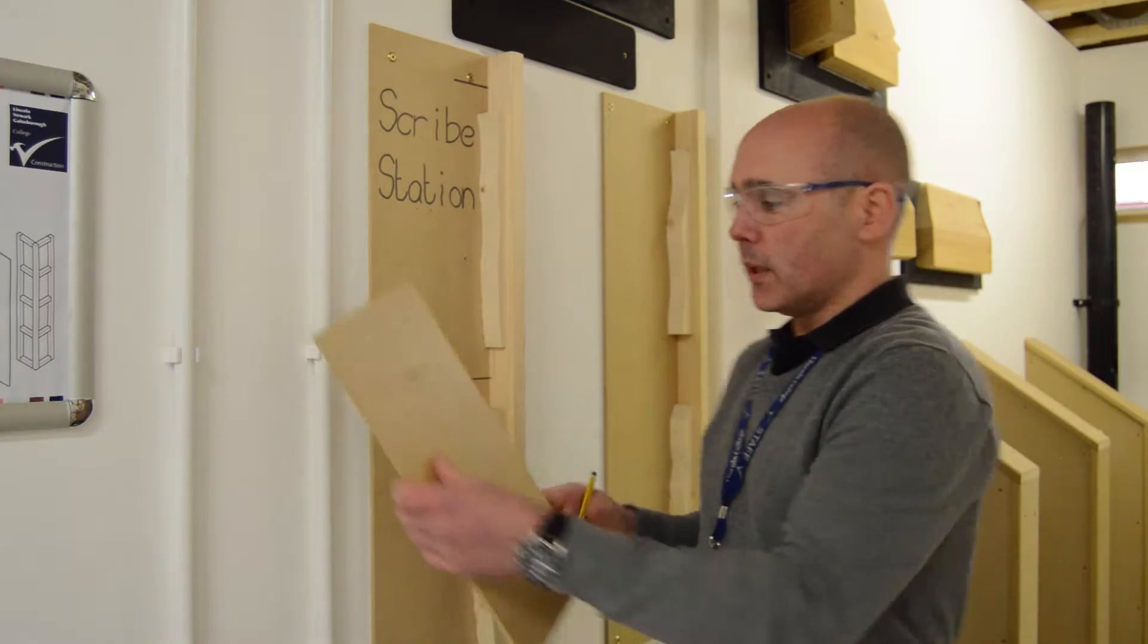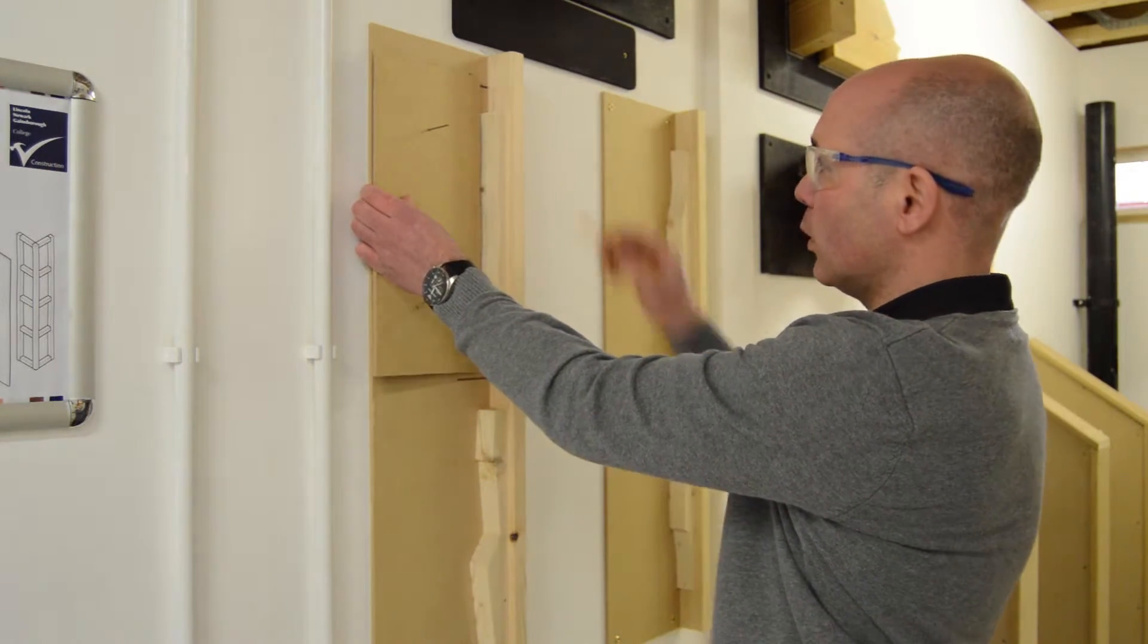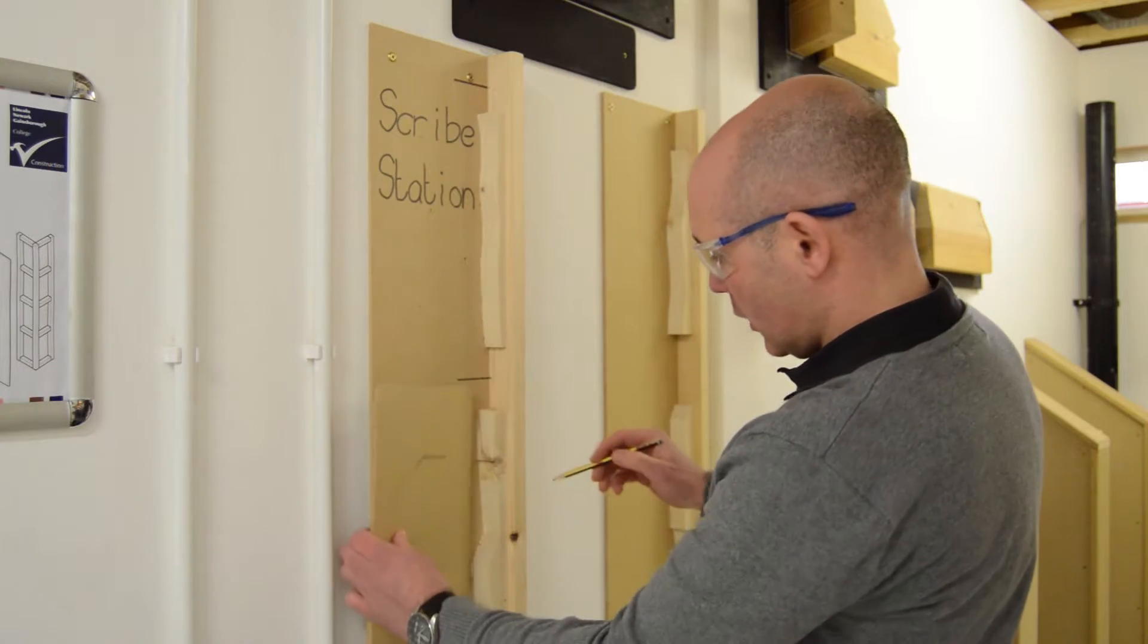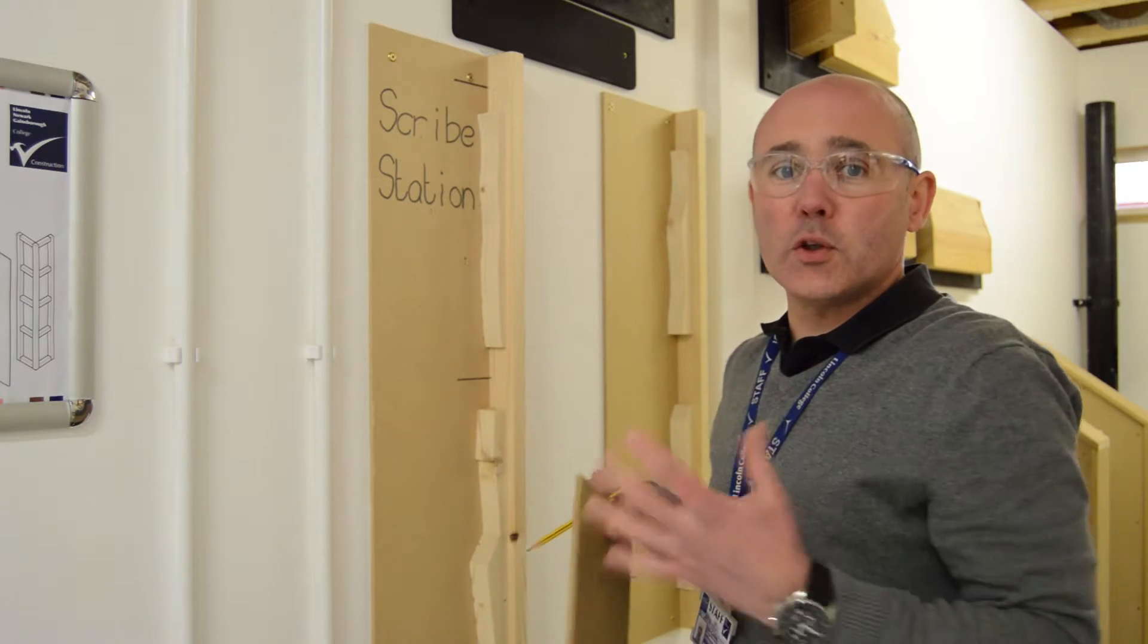Today I'm going to show you how to scribe a bit of timber to an uneven surface on the wall, whether it be slightly curved or you can see on this bottom we've got lots of straight lines. I'm going to show you two methods now of scribing to the wall.